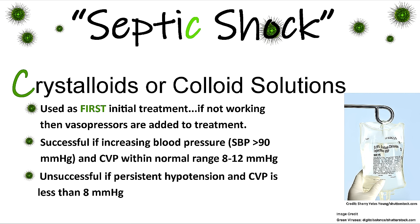C is for Crystalloids or colloid solutions — these are used in the initial treatment to help raise blood pressure. If they're not working, vasopressors are added. To evaluate if IV solutions are working, look for a rising blood pressure or rising systolic. Patients in septic shock will be in the ICU with hemodynamic monitoring devices, including central venous pressure (CVP) monitoring. CVP is the filling pressure on the right side of the heart — how much blood is returning to that heart. With septic shock's relative hypovolemia, fluid has left the vessels into interstitial tissue, depleting the circulatory system.